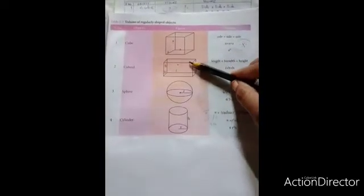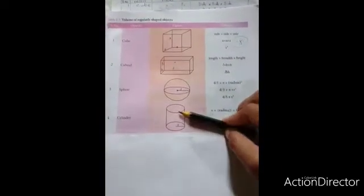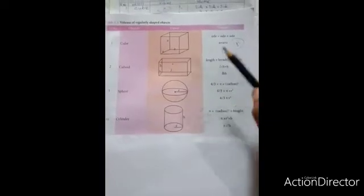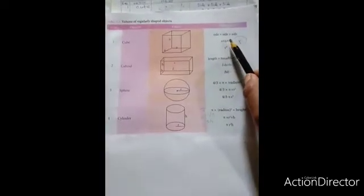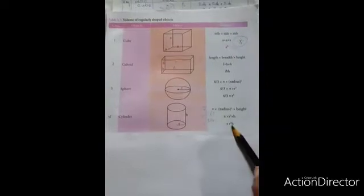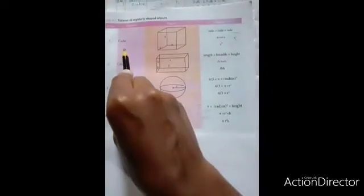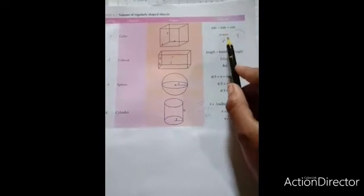Here, the dimensions of cube, cuboid, sphere and cylinder are given. And to find volume, we have the formula in this column. For cube, we have the formula side into side into side. That is a cube.